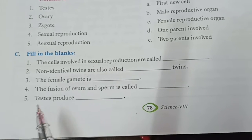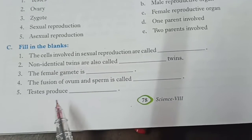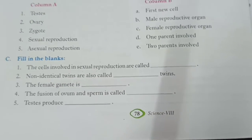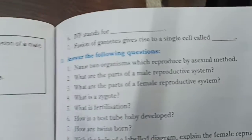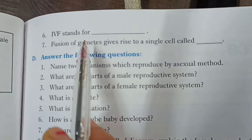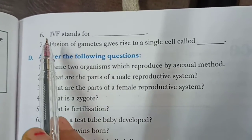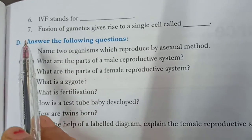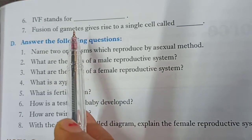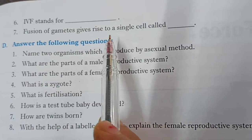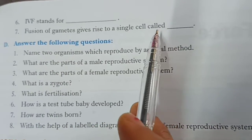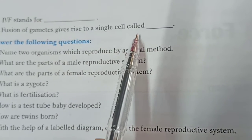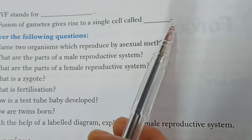Fifth: testis produces — testis kya produce kerta hai — it produces sperm, so answer is sperm. Sixth: IVF stands for — IVF stands for in vitro fertilization. Seventh: fusion of gametes gives rise to a single cell called — gametes ke fusion se ek single cell banta hai, usse kya kaha jata hai — answer will be zygote.